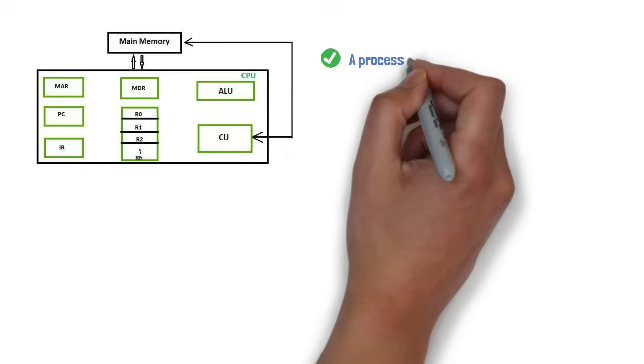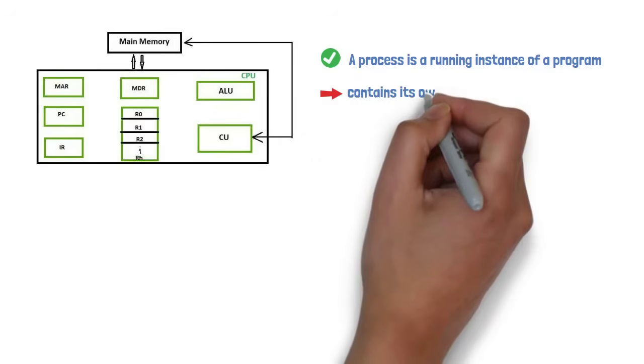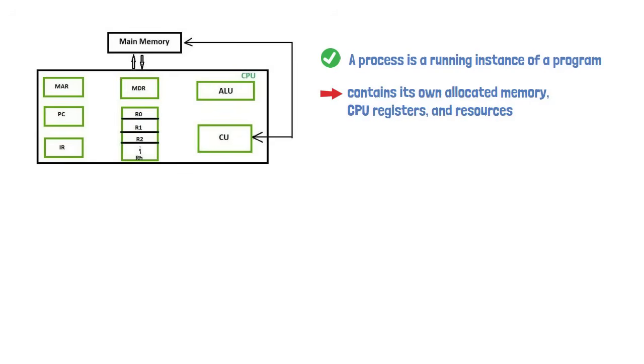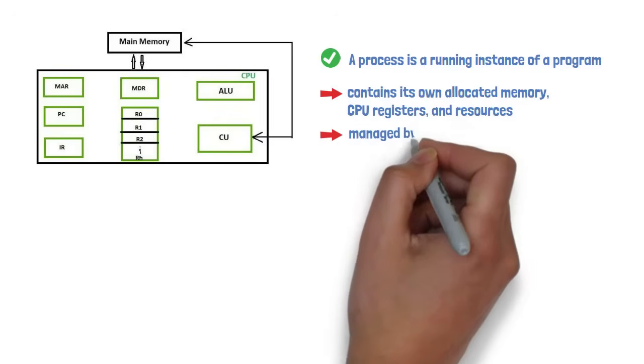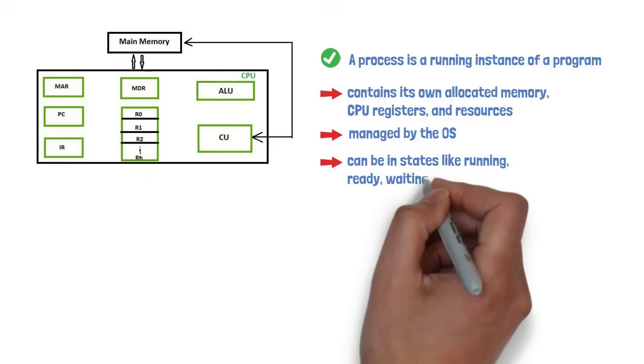A process is a running instance of a program. It contains its own allocated memory, CPU registers, and resources. Processes are managed by the OS and can be in states like running, ready, waiting, or terminated.